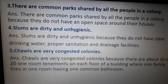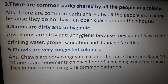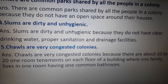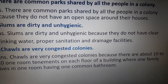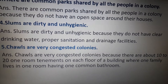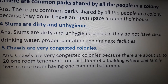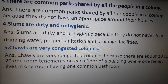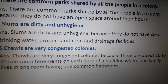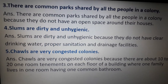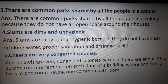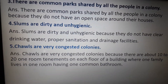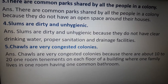Number 5: chawls are very congested colonies — answer: chawls are very congested colonies because there are about 10 to 20 one-room tenements on each floor of a building, where one family lives in one room having one common bathroom. So students, write these two exercises — Exercise B and D — in your copy.